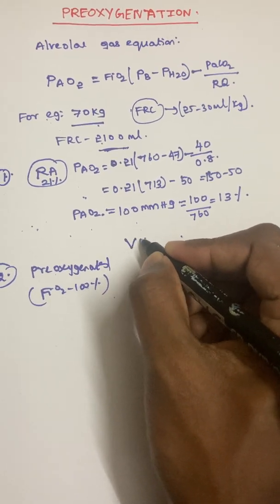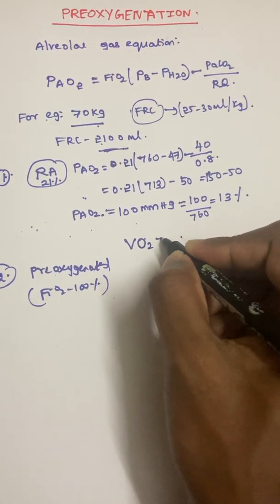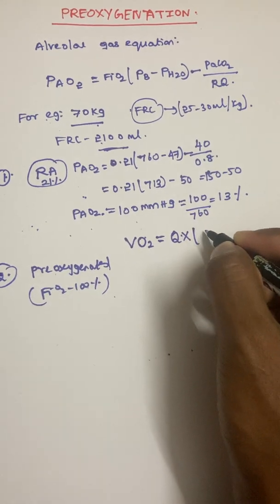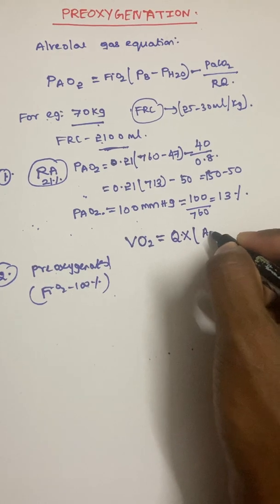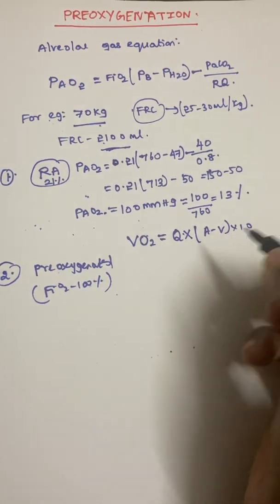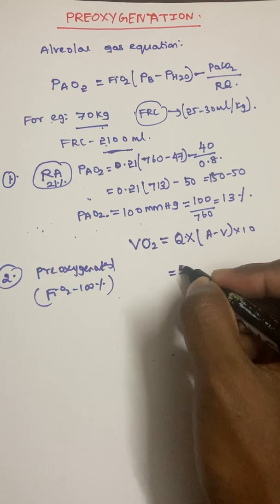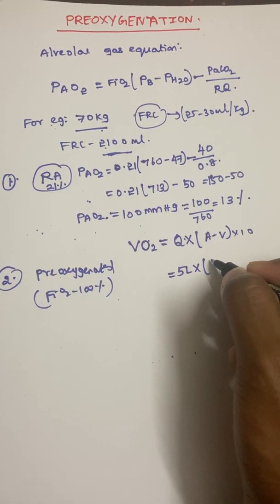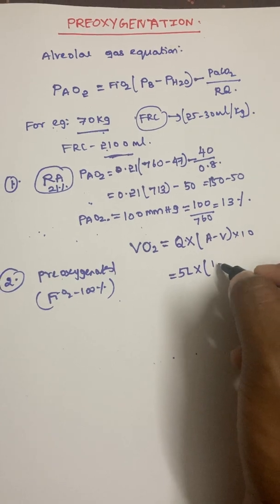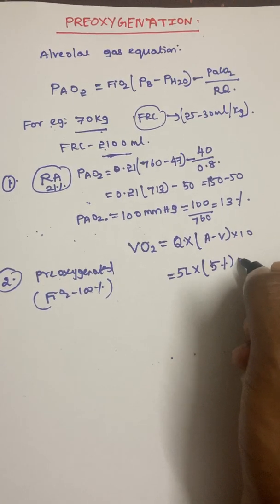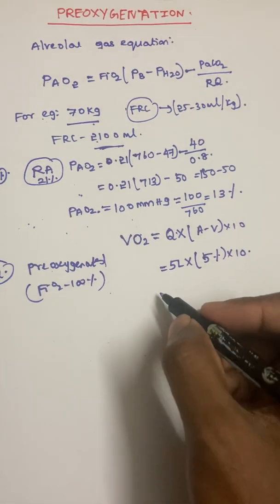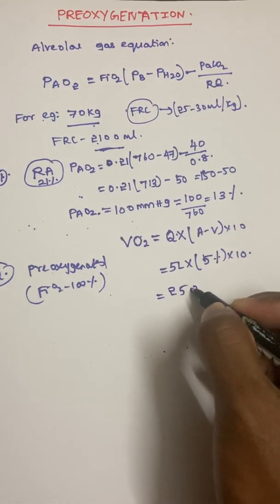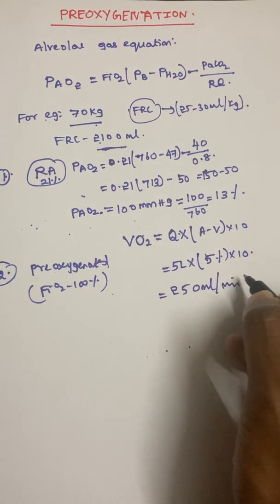Next, we need to know VO2, the oxygen consumption. Using the Fick equation — cardiac output × (arterial minus venous concentration) × 10 — with cardiac output of 5 L/min and an arteriovenous difference of 5%, VO2 = 5 × 5% × 10 = 250 ml per minute. Average adult oxygen consumption is approximately 250 ml/min.